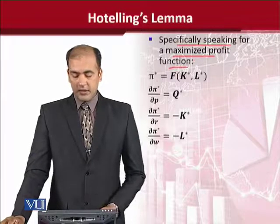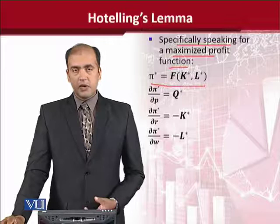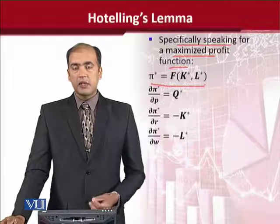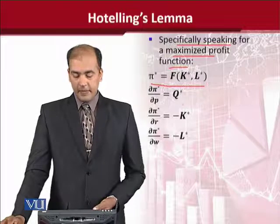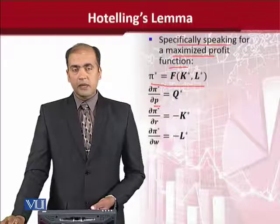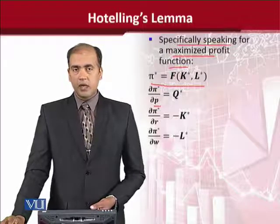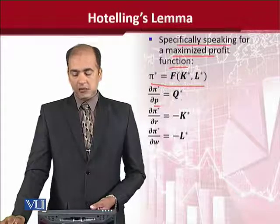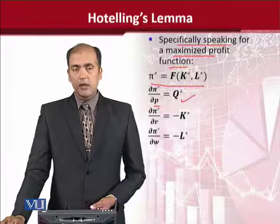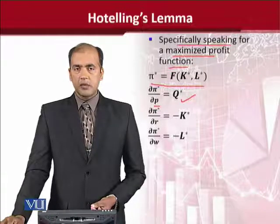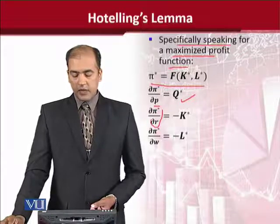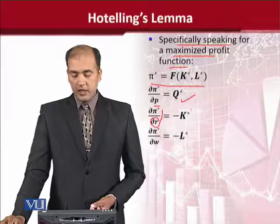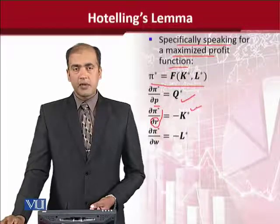For example, if we have the profit function, which is the optimized level of profit, and if we calculate its derivative with respect to the price of the output — as we just saw in the last step — we will get the output. But if we differentiate it with respect to the price of the inputs, we will get their demand functions.